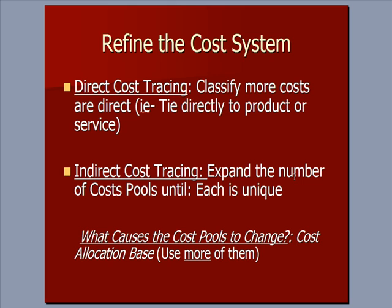Activity-based costing is about redefining the cost system. Going back to the beginning of cost and management accounting, we talked about direct and indirect costs. We trace direct costs — if you think about a pair of Levi's blue jeans, we trace the cost of the denim material directly to the pair of jeans. So in order to refine things, we want to classify as many costs as possible as direct, assigned directly to the product or service.